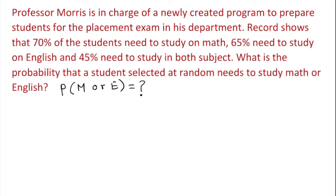What we know in this case is 70% need math. So let's write it down here. Probability of math equals 70%. Probability of English, E for English, equals - let's take a look - 65% need to learn English. So 0.65.